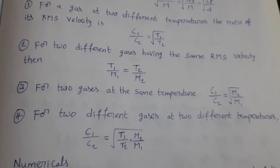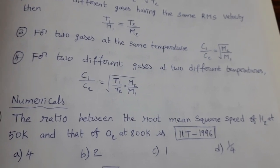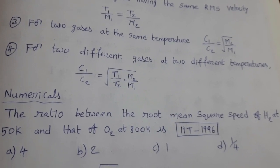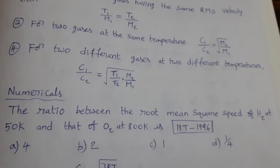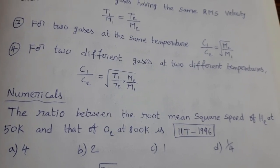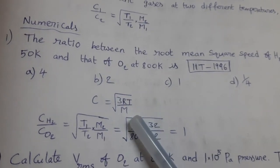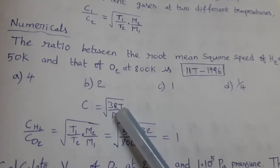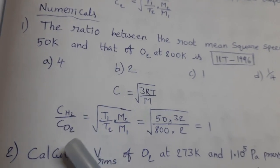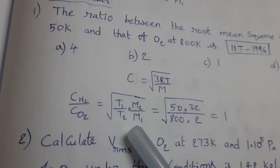Now see the related numericals. The ratio between the root mean square speed of H₂ at 50 K and that of O₂ at 800 K. Two gases are given — H₂ and O₂ — with different temperatures. So the formula is C = √(3RT/M), where variables are temperature and molecular mass. RMS velocity of hydrogen divided by RMS velocity of oxygen equals √(T₁/T₂ × M₂/M₁).